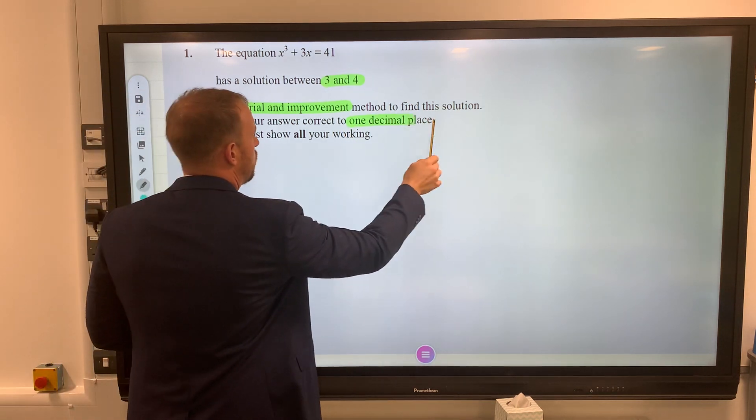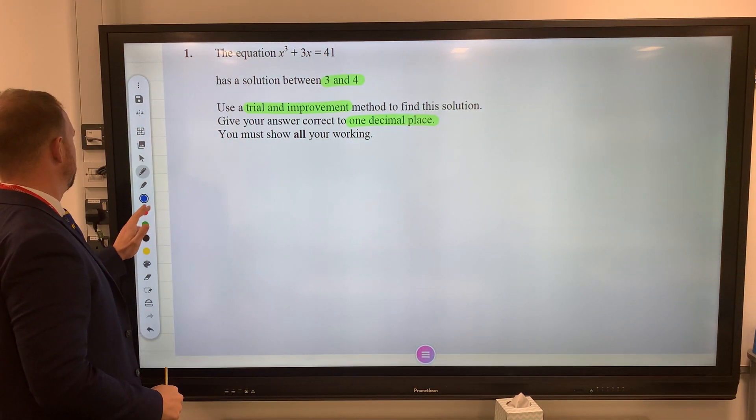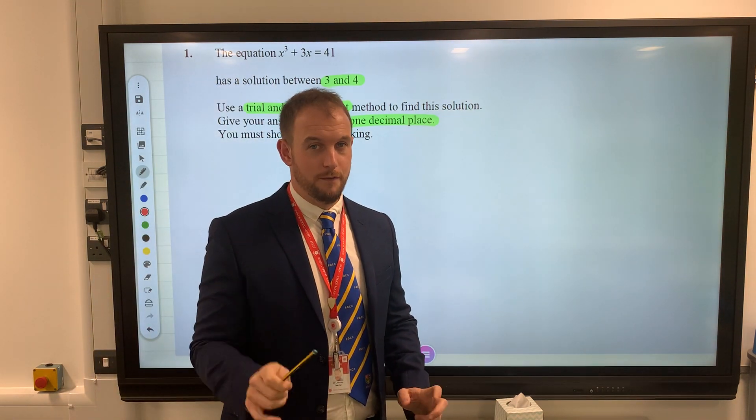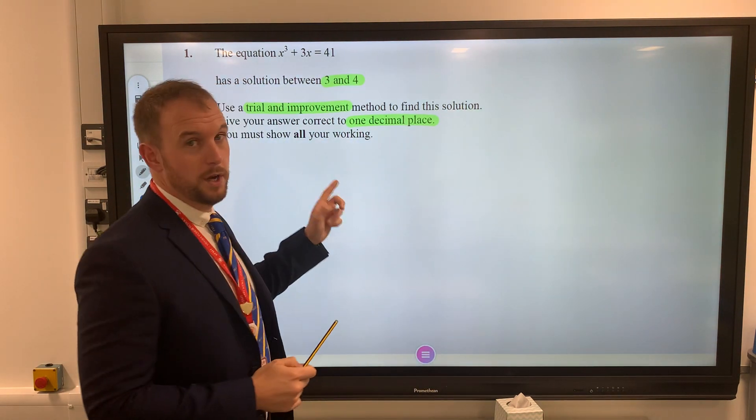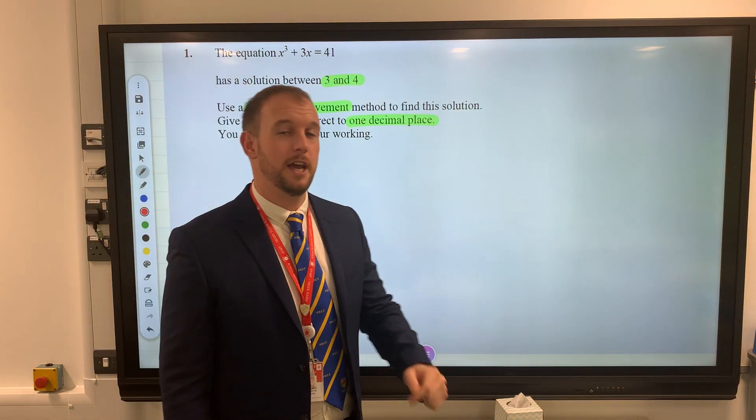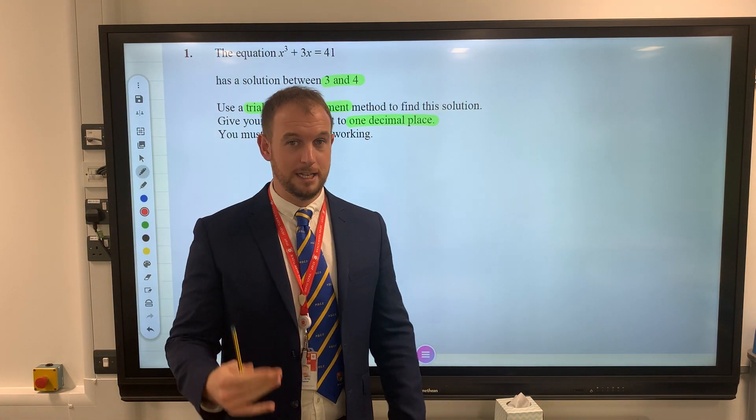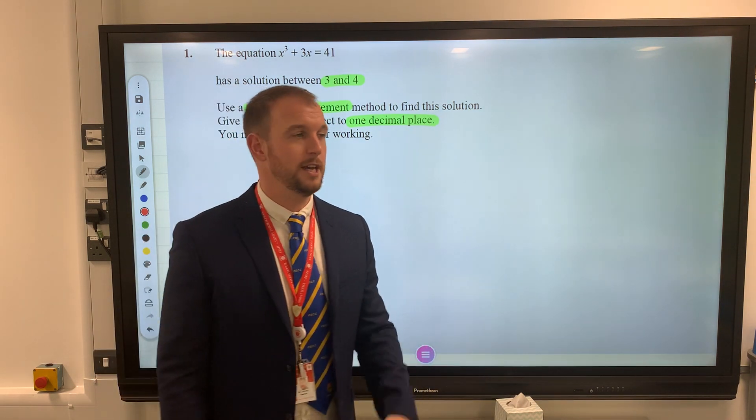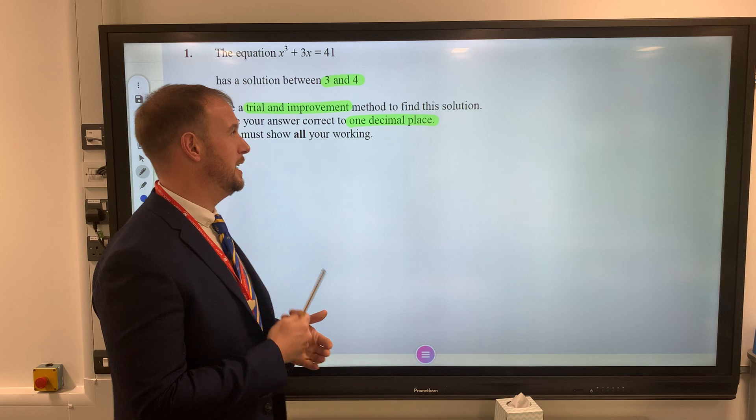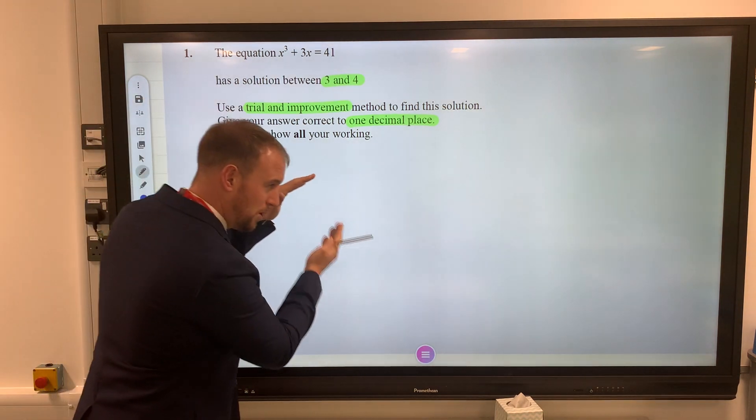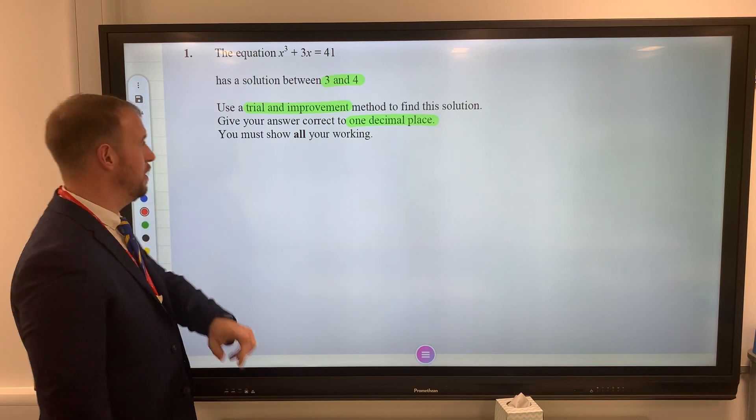The best thing about these questions is it looks the same every year. Look for those words - it tells you it's trial and improvement. Pythagoras questions don't necessarily tell you to use Pythagoras or trigonometry or simultaneous equations, but this one does. Exactly what it says on the tin. You'll notice it gives you a lot of space - another clue.